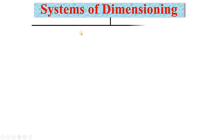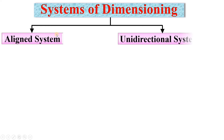Let's see them one by one. First, systems of dimensioning. Basically there are two types: the aligned system and the unidirectional system.